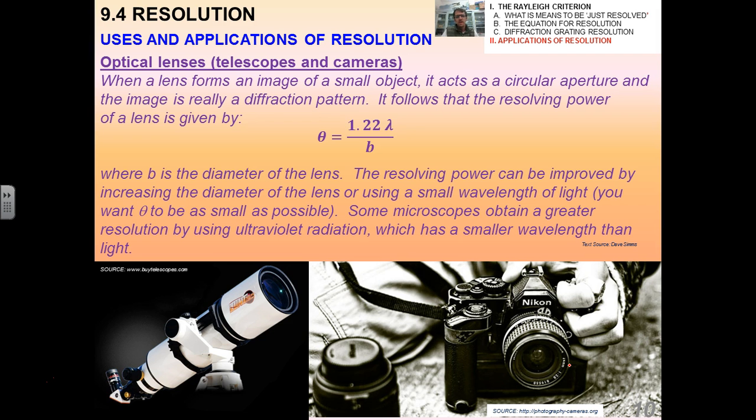I want to talk a little bit about uses and applications of resolution. Number one: telescopes and cameras. We've obviously talked about cameras before, we just did an example with that. When a lens forms an image of a small object, it acts as a circular aperture and the image is really a diffraction pattern. So we use this version of the equation of course: 1.22 lambda over b, where b is the diameter of the lens. The resolving power can be improved by, when I say improve remember I'm talking about lowering theta, I can lower theta by doing one of two things. I can make b bigger, so I can increase the size of the lens, that's why you see some of these cameras with these huge gigantic lenses. Or what I can do is I can decrease the wavelength of light which increases the frequency. Some microscopes obtain even a greater resolution by using ultraviolet radiation, therefore decreasing lambda which would increase the frequency.